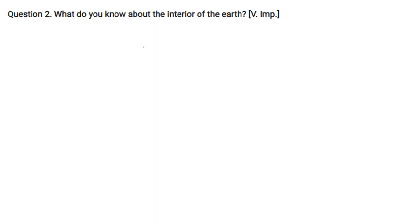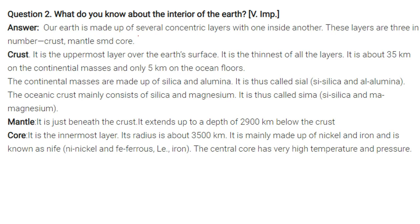What do you know about the interior of the earth? Interior. So our earth is made up of several concentric layers, like this first one, second one, you can say third one, with one inside the another just like an onion. So these layers are three in number: first of all we have crust, then we have the mantle, and then this one is your third one which is the core.